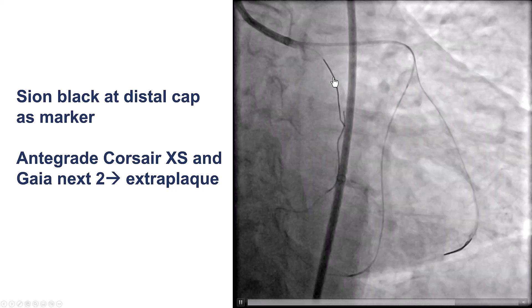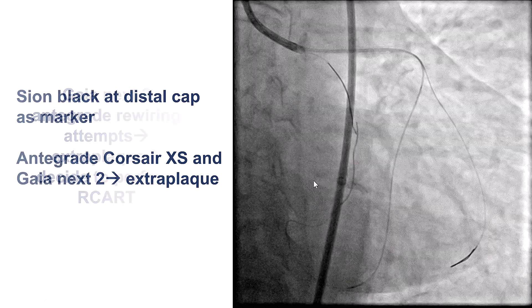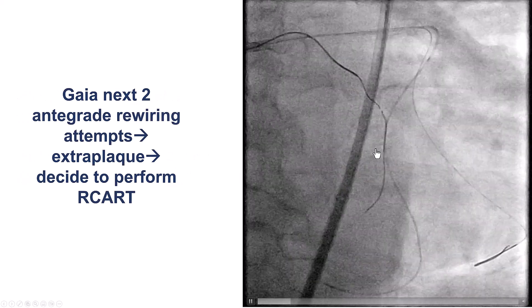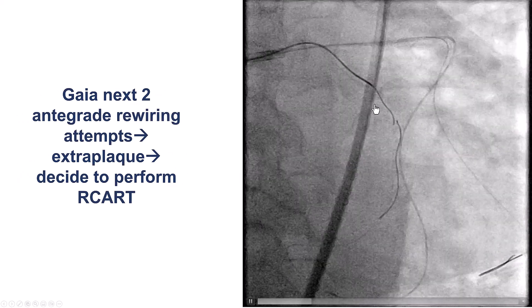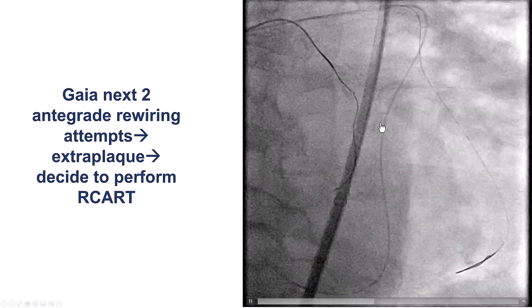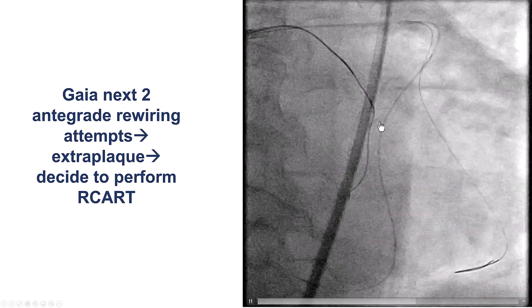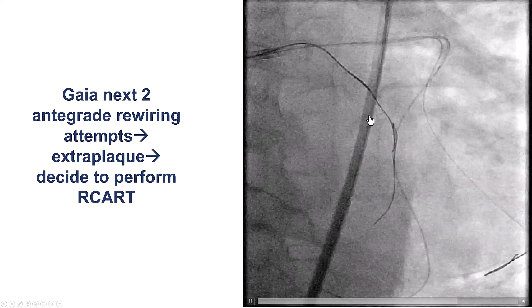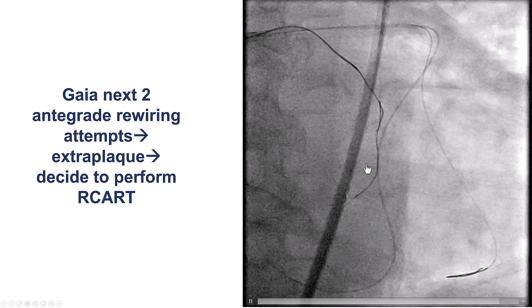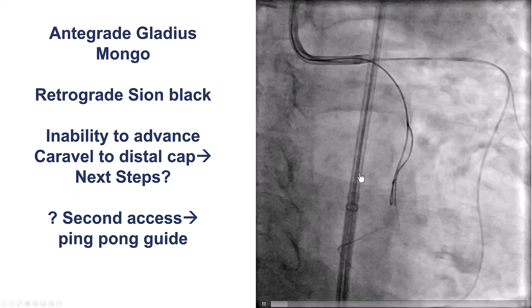We tried to cross with a Corsair XS and a Gaian X2, but that appeared to be going extraluminal. More attempts were made to advance the guide wire further down, and although the guide wires were close to each other, the antegrade guide wire remained in the extraluminal space.